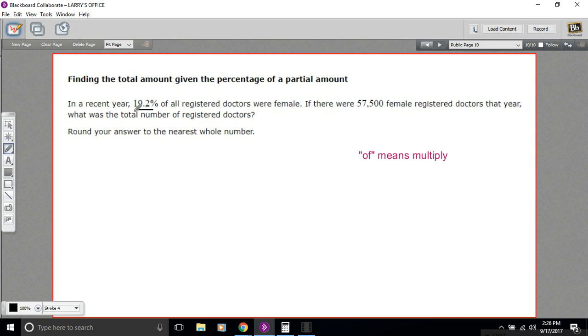So basically in this problem, what happened was someone took 19.2% of that total number of doctors and they came up with 57,500 of them being female.